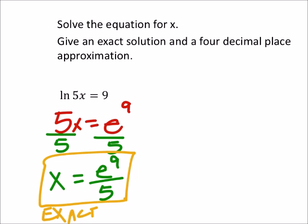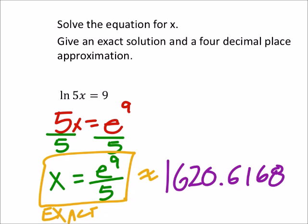And of course if I wanted to find the approximation, I would just plug this into my calculator. So e to the power of 9 divided by 5. There's something big on this one. I got 1620, and we want four decimal places, 0.6168. So this is an approximation.